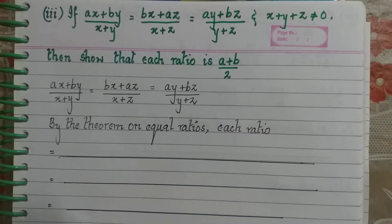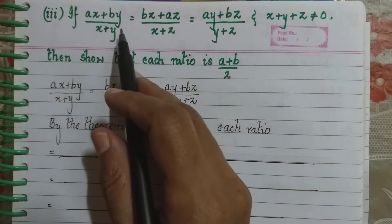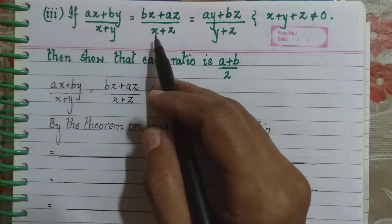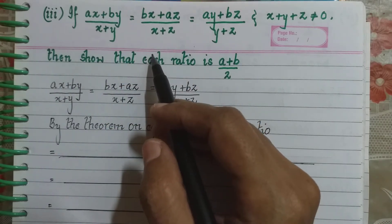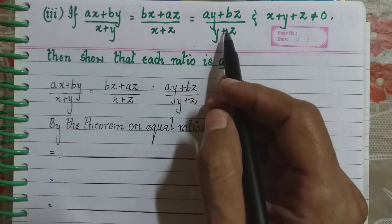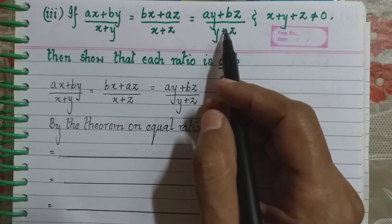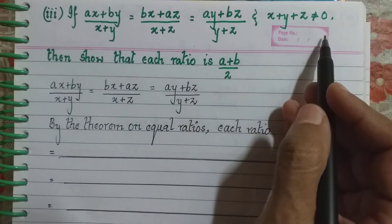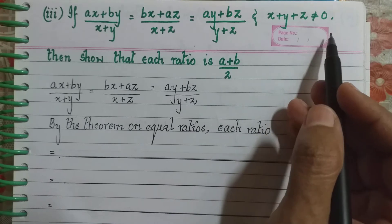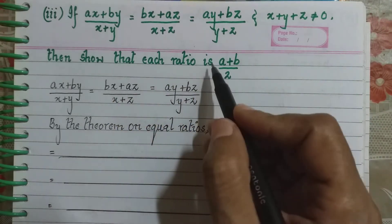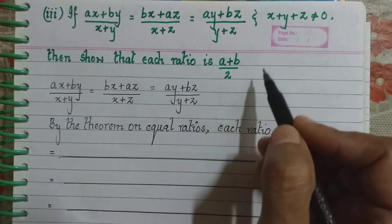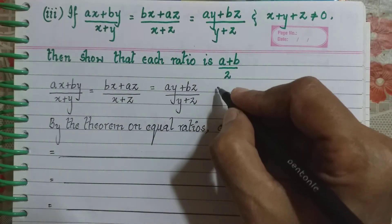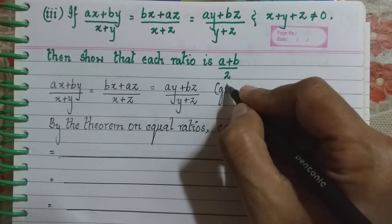Coming to the third sub-question: if (AX + BY)/(X + Y) = (BX + AZ)/(X + Z) = (AY + BZ)/(Y + Z) and X + Y + Z ≠ 0, then show that each ratio is equal to (A + B)/2.